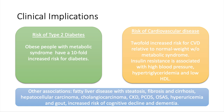Other important associations include fatty liver disease, liver fibrosis, cirrhosis, hepatocellular carcinoma, cholangiocarcinoma, chronic kidney disease, polycystic ovarian syndrome, obstructive sleep apnea, hyperuricemia, gout, and increased risk of cognitive decline and dementia.